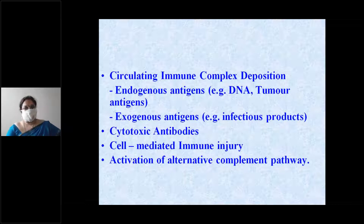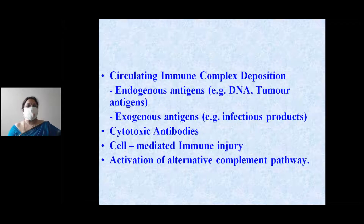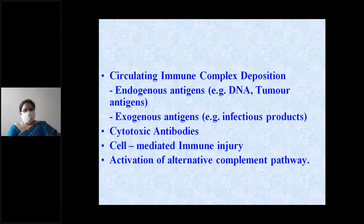Endogenous antigens include DNA and tumor antigens. Exogenous antigens from the circulation — for example, infectious agents — can also cause glomerular injury. Additionally, cytotoxic antibodies directed against antigens expressed by cells cause injury.